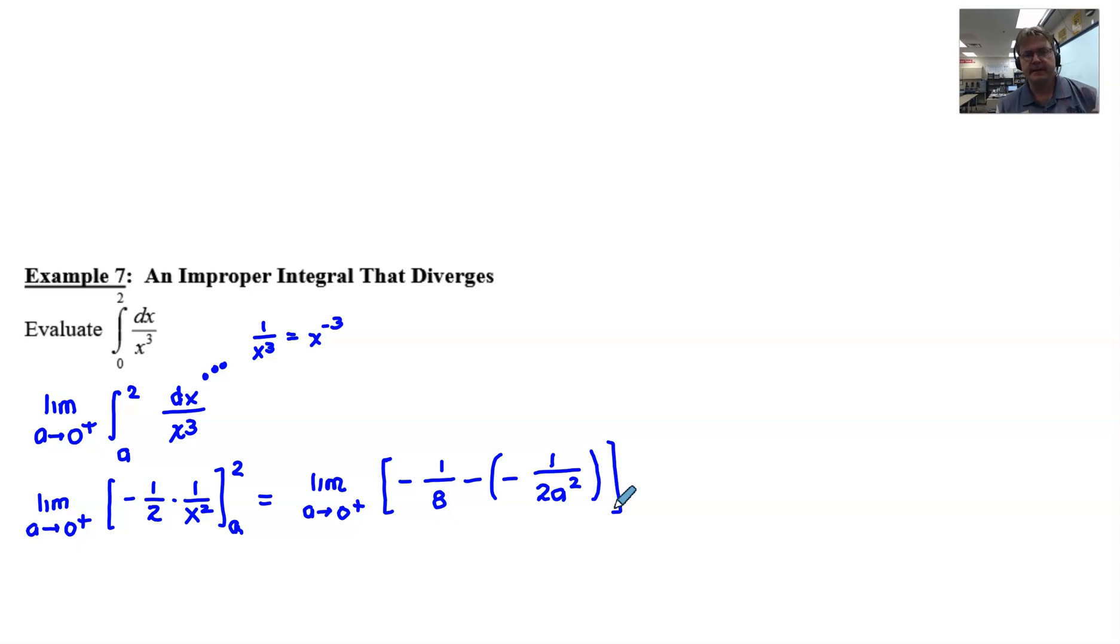Now the limit comes into play. The limit is not going to affect this first value, so essentially we're just going to stay as negative 1 eighth. I suppose you can combine those two negatives. Now we have to think about what's happening down here.